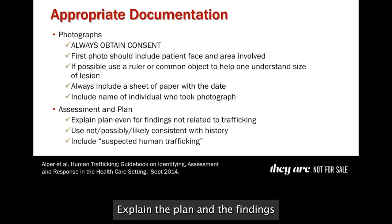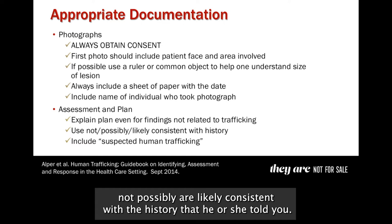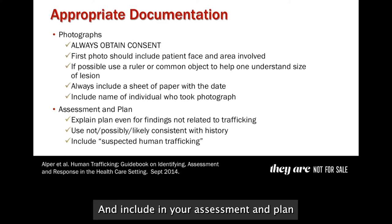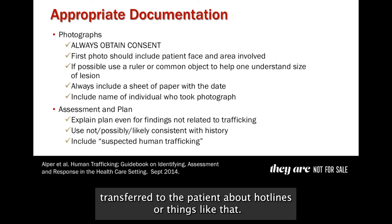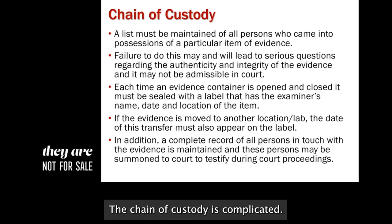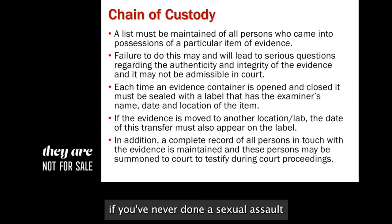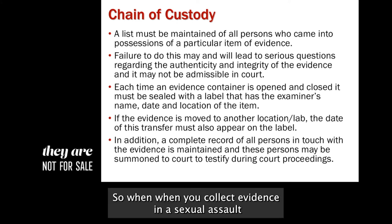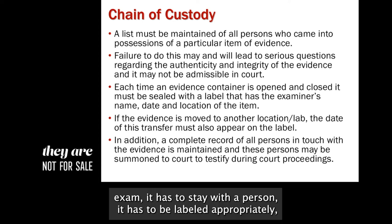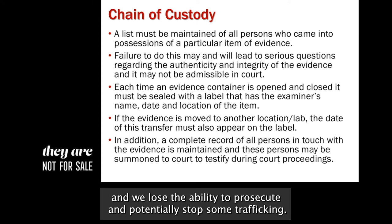For assessment and plan, explain the findings for medically treatable things, then note that findings are either not possibly or likely consistent with the history he or she told you. Include in your assessment and plan 'suspected human trafficking' and information transferred to the patient about hotlines. The chain of custody is complicated. If you've never done a sexual assault exam, you need to be thoughtful, because you could really goof up any chance of prosecution. When you collect evidence in a sexual assault exam, it has to stay with a person, be labeled appropriately, and be transferred to forensics labs properly — or it is thrown out and we lose the ability to prosecute.